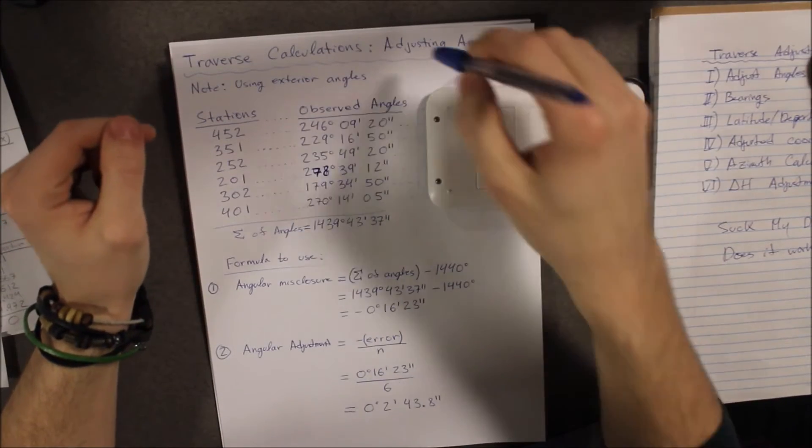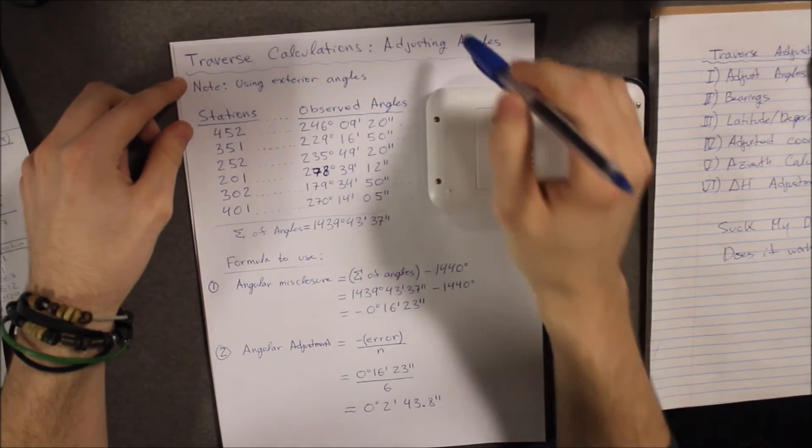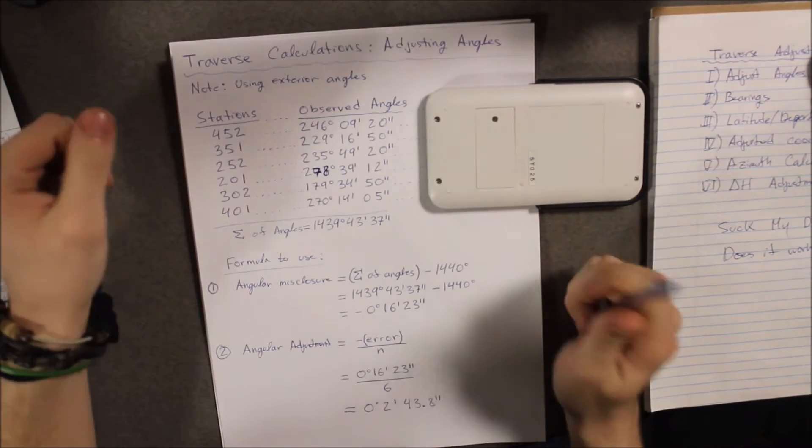Hey guys, so today I'm going to show you how to proportionally distribute the angular misclosures in your traverse.